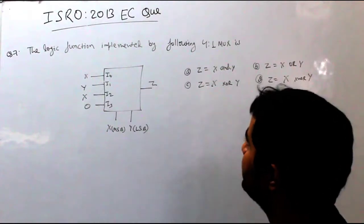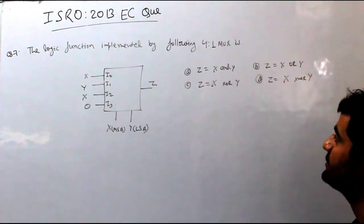Let's see the next question. The logic function implemented by the following 4-to-1 mux is...